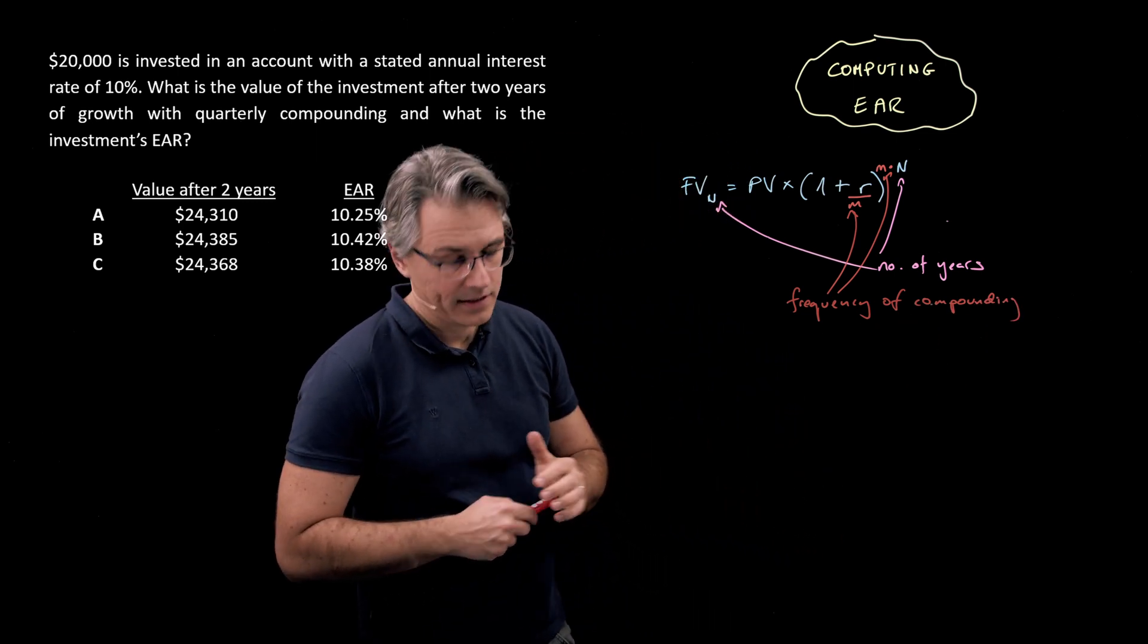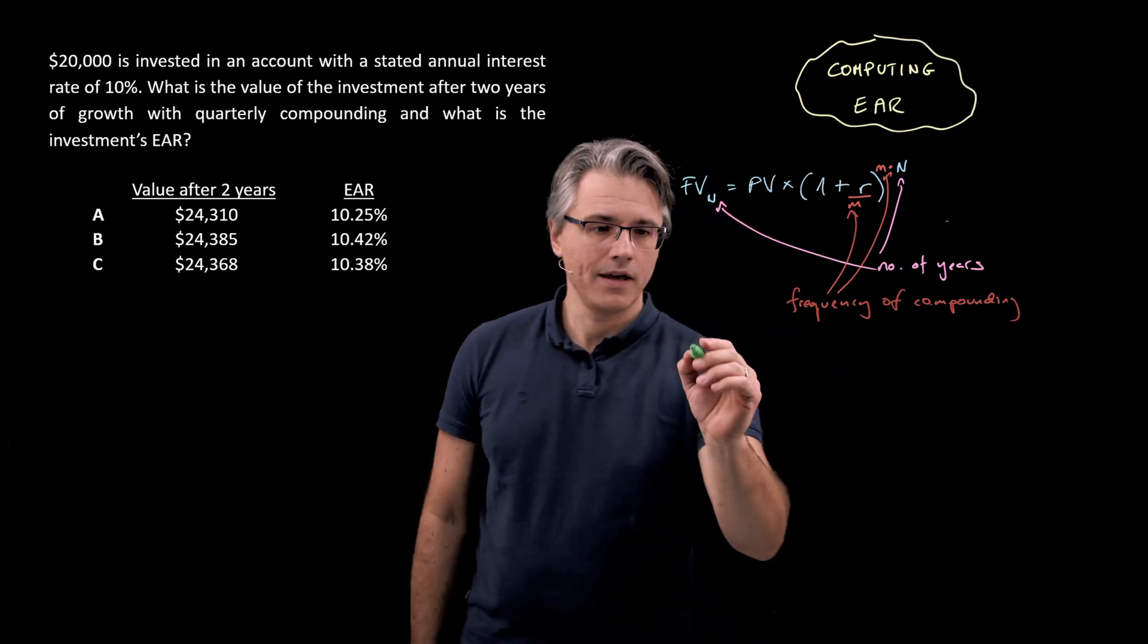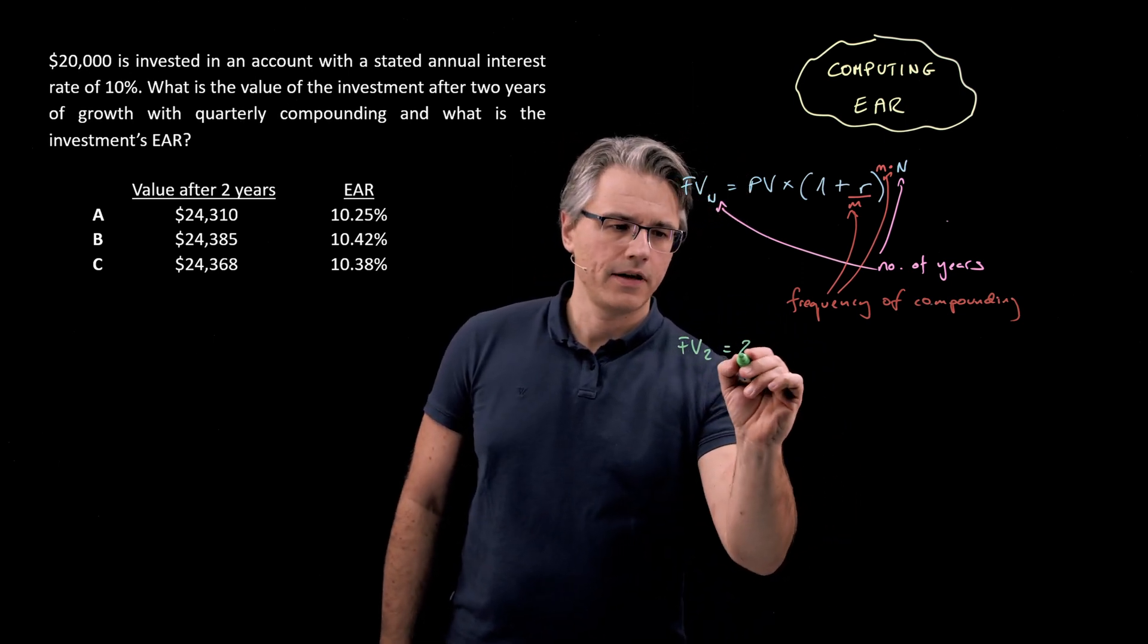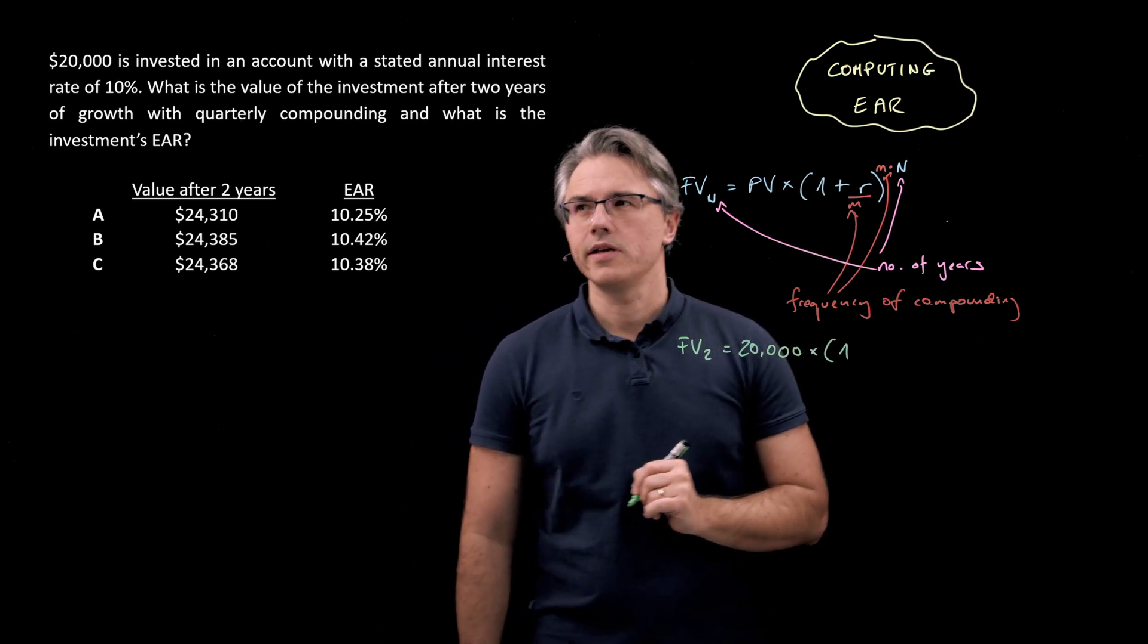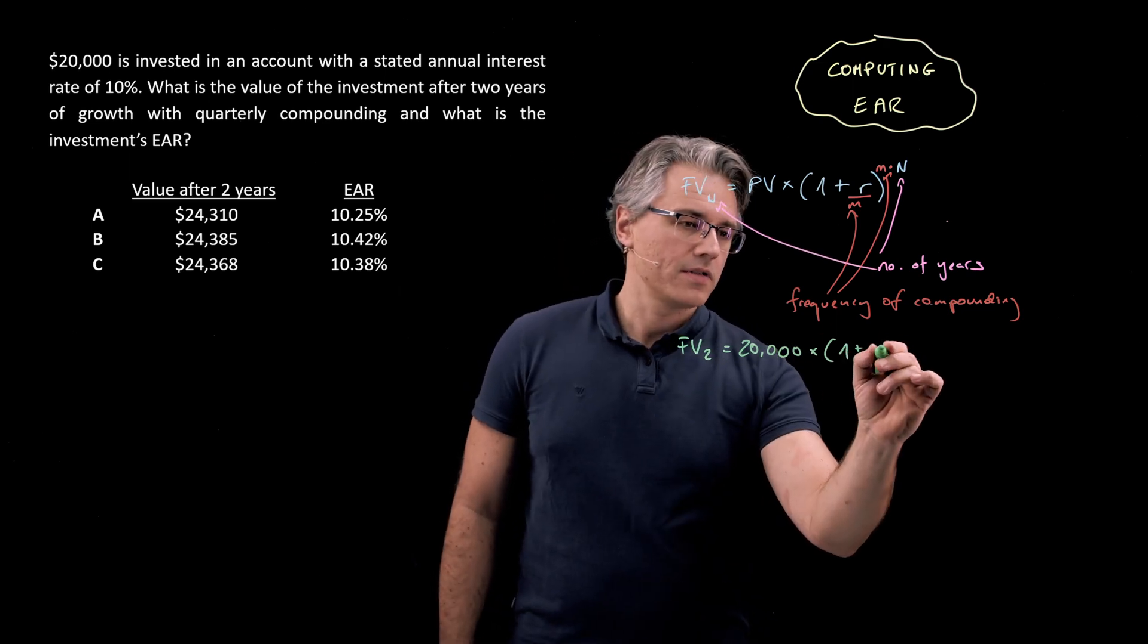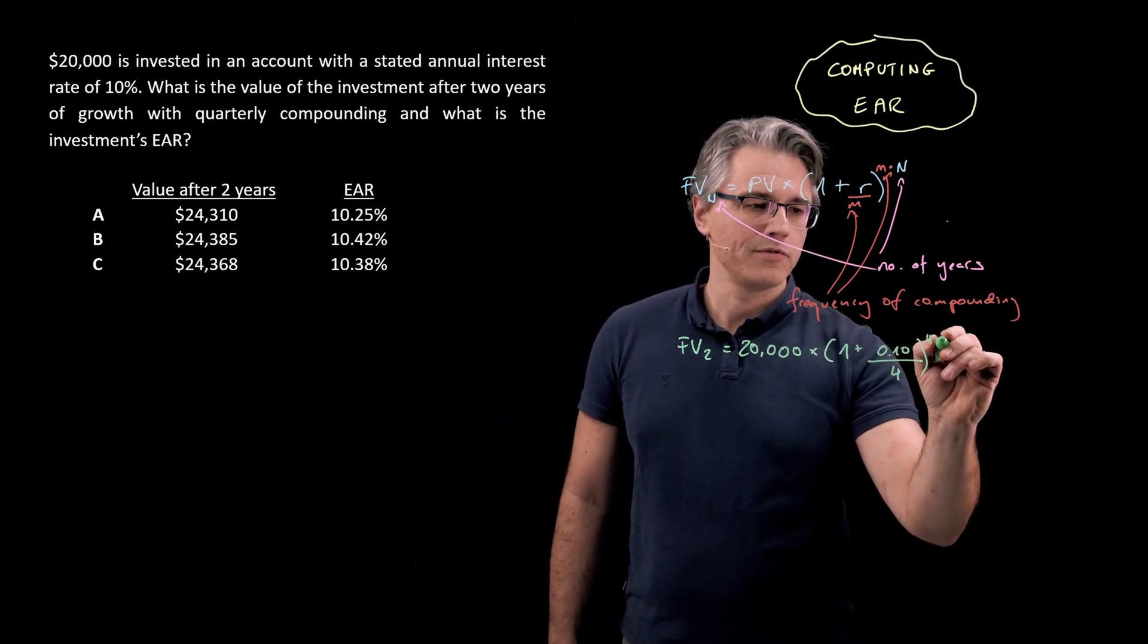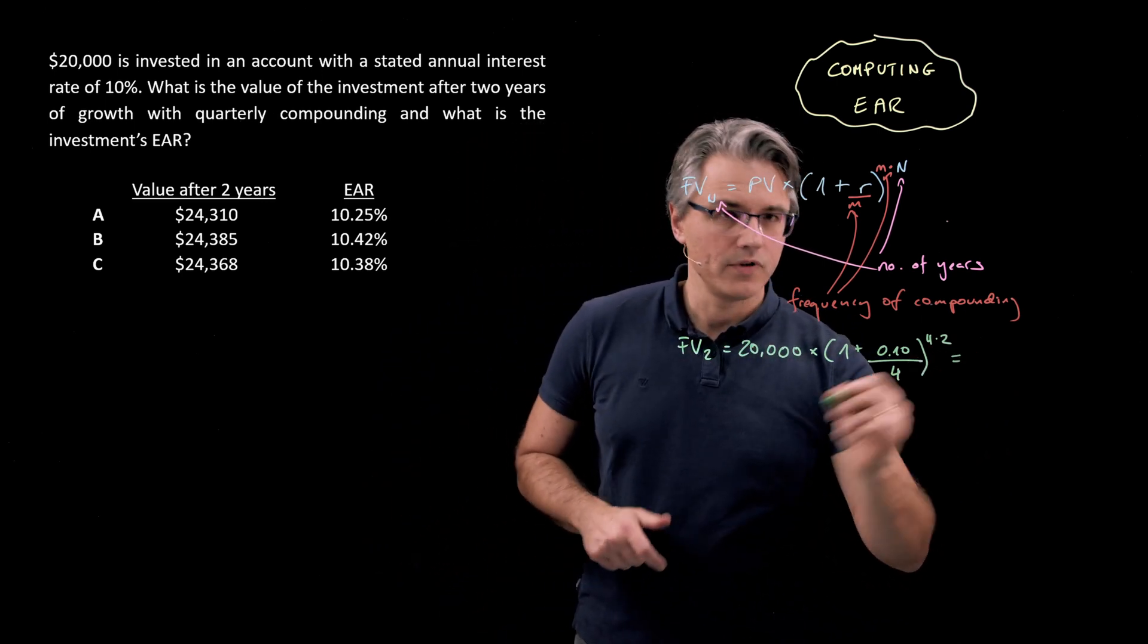Let's see what this gives in terms of our problem here. We've got the FV after two years. So FV_2 equals the present value which is 20,000 invested times 1 plus 0.1 divided by 4 to the power of 4 times 2 which effectively is going to give us 8 over there. Let's see what this equals.